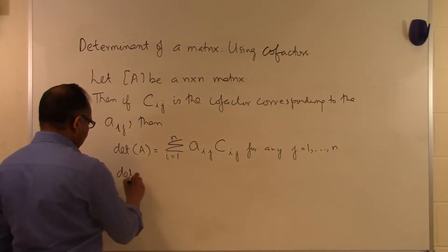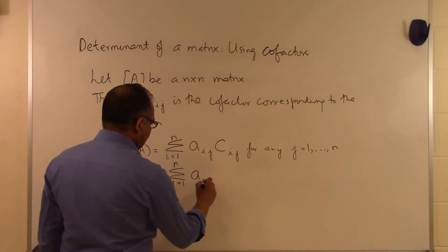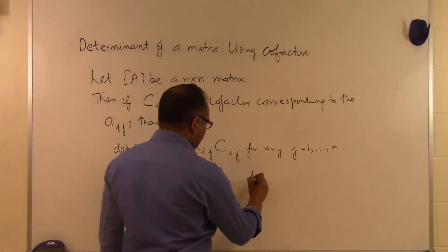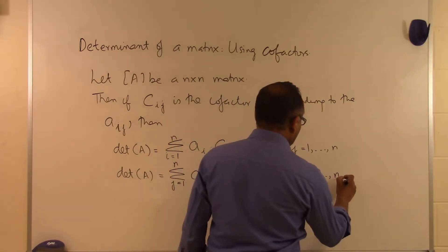Or you can also use a different formula: determinant of A in terms of columns. Summation j equals 1 to n of Aij Cij for any i equal to 1 all the way up to n.